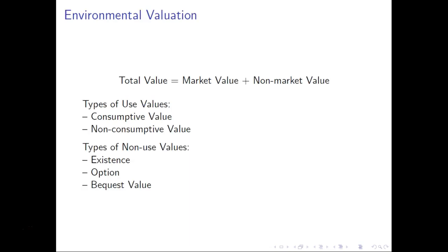Before we get started on stated preference techniques, let's go back and define something we previously talked about: the idea of implicit value. The problem with environmental amenities is that they have a market value but also a non-market value, or what you might call implicit value. This is important because if we only consider the market value of an environmental amenity, we are highly discounting how much that amenity is actually worth to society by ignoring its non-market value.